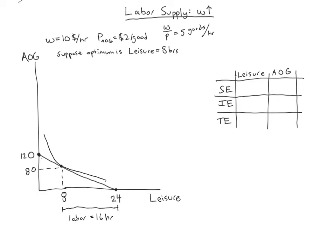Now what we want to think about is: suppose the wage increases. Our thought experiment for this video is a wage increase, and I'll encourage you to do an analysis of a wage decrease after this video. Let's say the wage doubles to $20 per hour, but the all other goods price stays the same at $2 per good — then we'll get a new budget constraint. We'll still have the point at 24 hours of leisure as our maximum, but since the wage doubled, we'll be able to buy twice as many all other goods. Our new maximum amount of goods we can buy is 240.